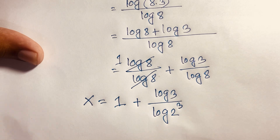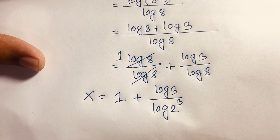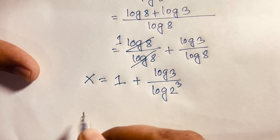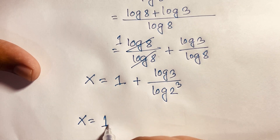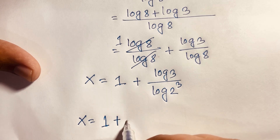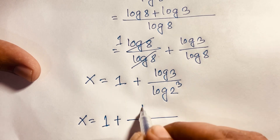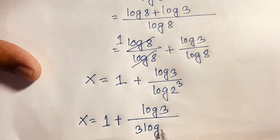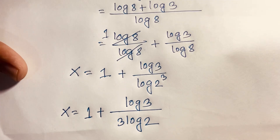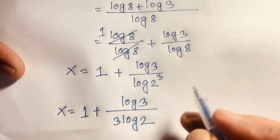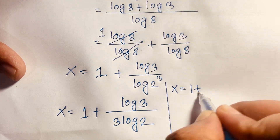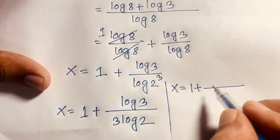Since 8 equals 2 to the power 3, log(8) equals 3·log(2). So the expression becomes x is equal to 1 plus log(3) over 3·log(2).